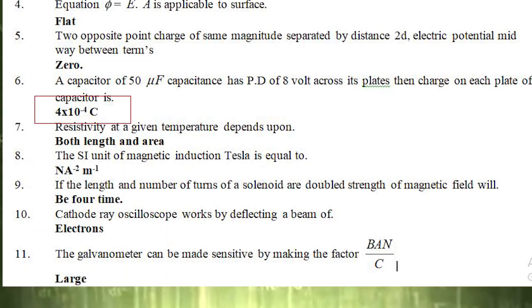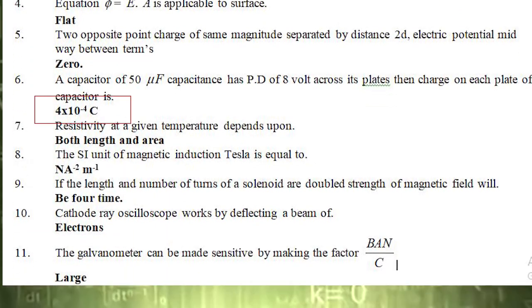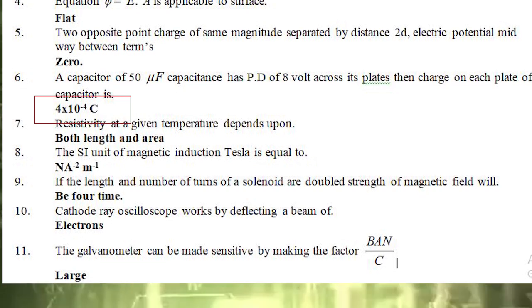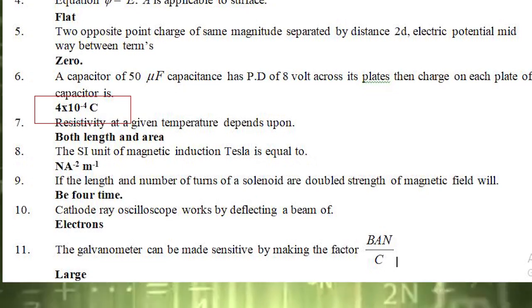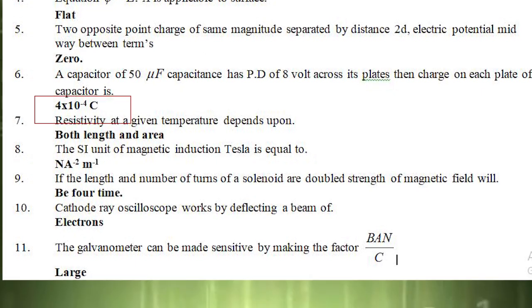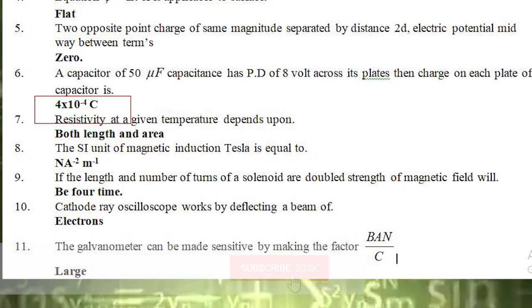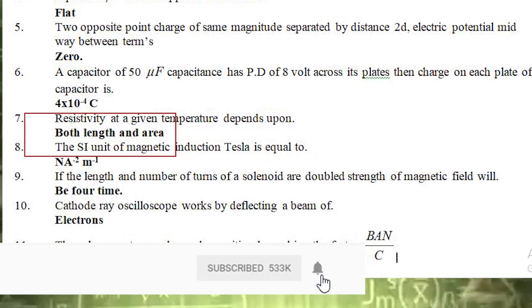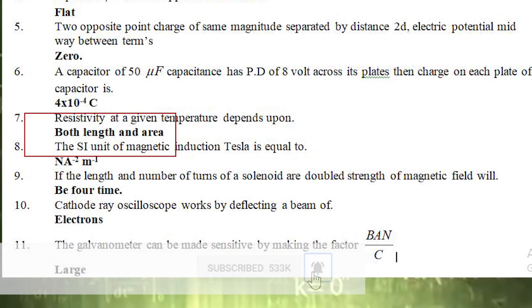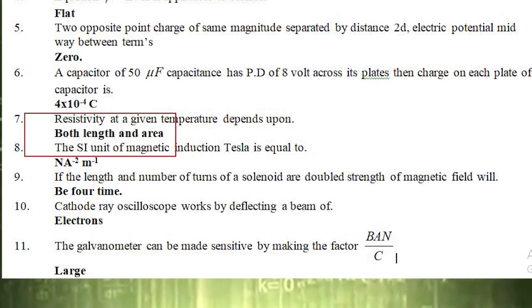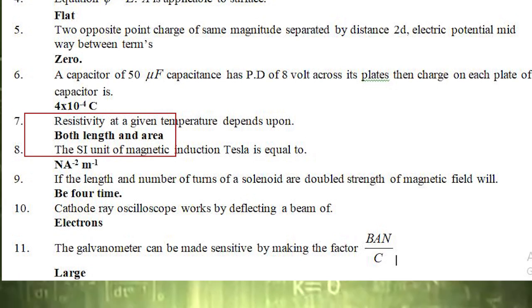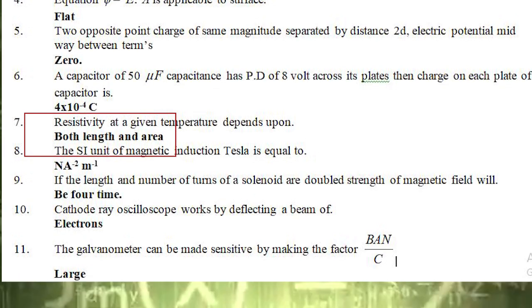The sixth statement is: a capacitor of 50 microfarad capacitance has a potential difference of 8 volts across its plates. What is the charge on each plate of the capacitor? The correct answer is 4 multiplied by 10 raised to the power minus 4 coulombs. The seventh statement: the correct answer is both length and area.